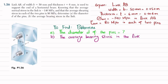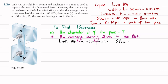Let's start with the solution. As discussed, this link AB is in compression, so there will be a compressive load P due to the stress. Sigma is given as 140 megapascal — I have removed the negative sign because the negative sign shows compression.